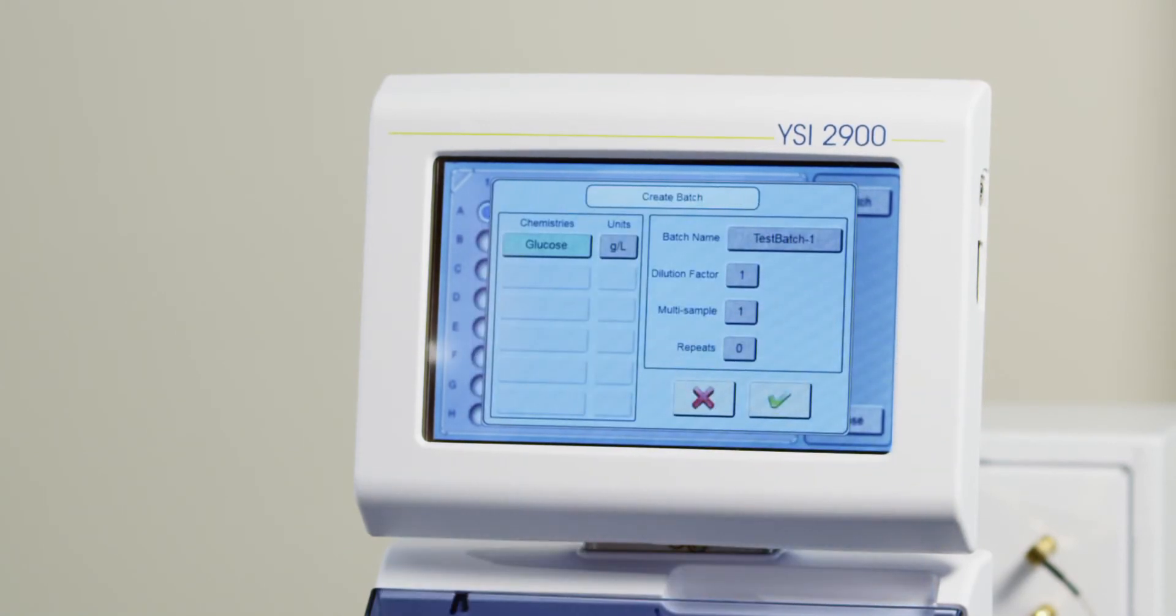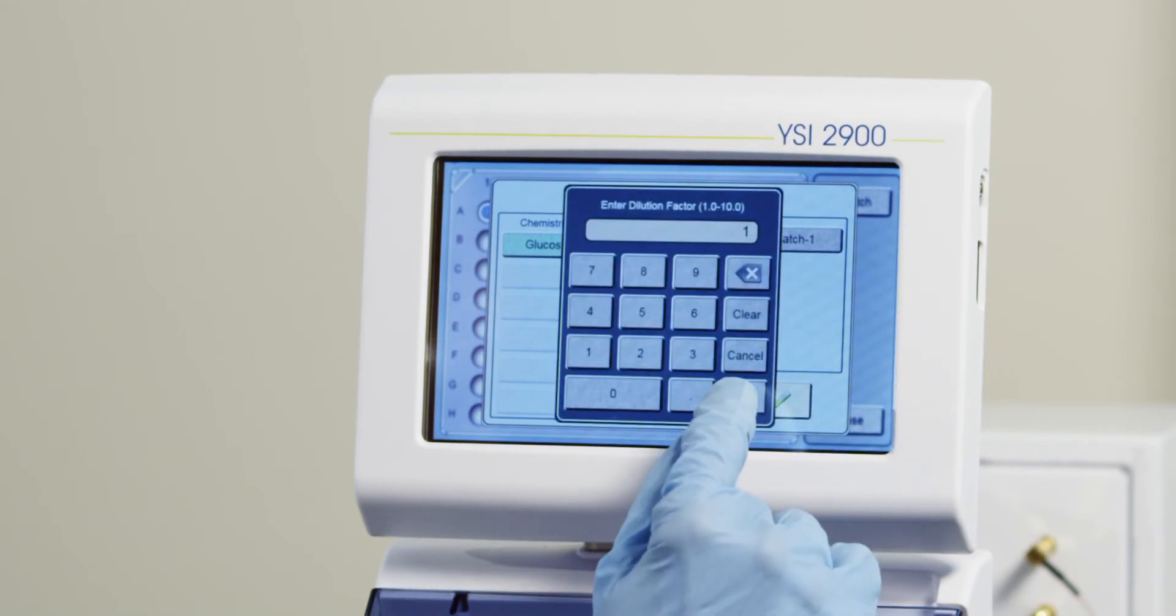If your samples are diluted and you would like the instrument to account for this dilution factor, touch Dilution Factor, type in the dilution factor desired, and press OK.